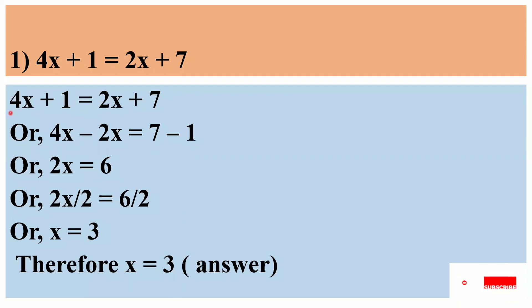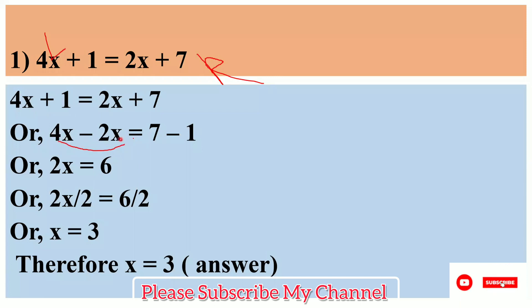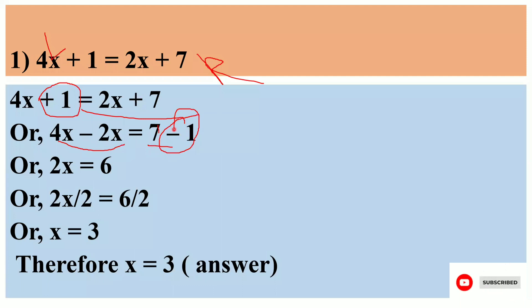So the equation has a left-hand side and a right-hand side. On the left-hand side we have 4x plus 1, and on the right-hand side we have 2x plus 7. We will rearrange: 4x minus 2x on one side, and 7 minus 1 on the other side.